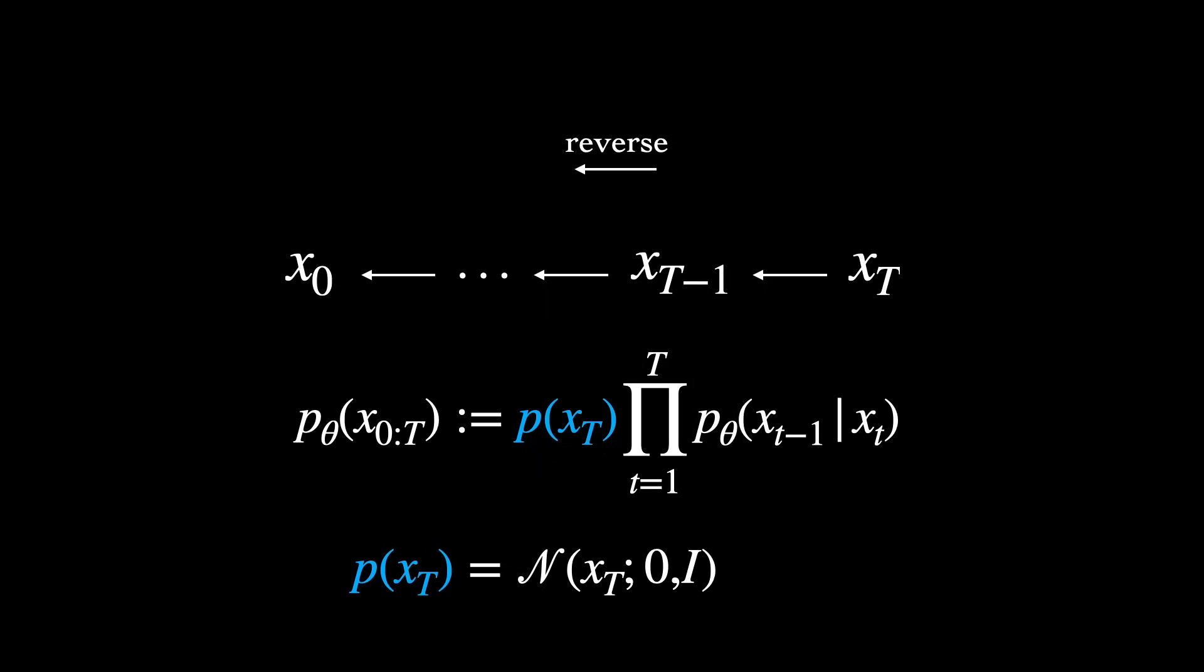Okay great, so we've defined these forward and reverse diffusion processes. The forward process is designed to essentially push a sample off the data manifold, turning it into noise. And the reverse process is trained to produce a trajectory back to the data manifold, resulting in a reasonable sample.